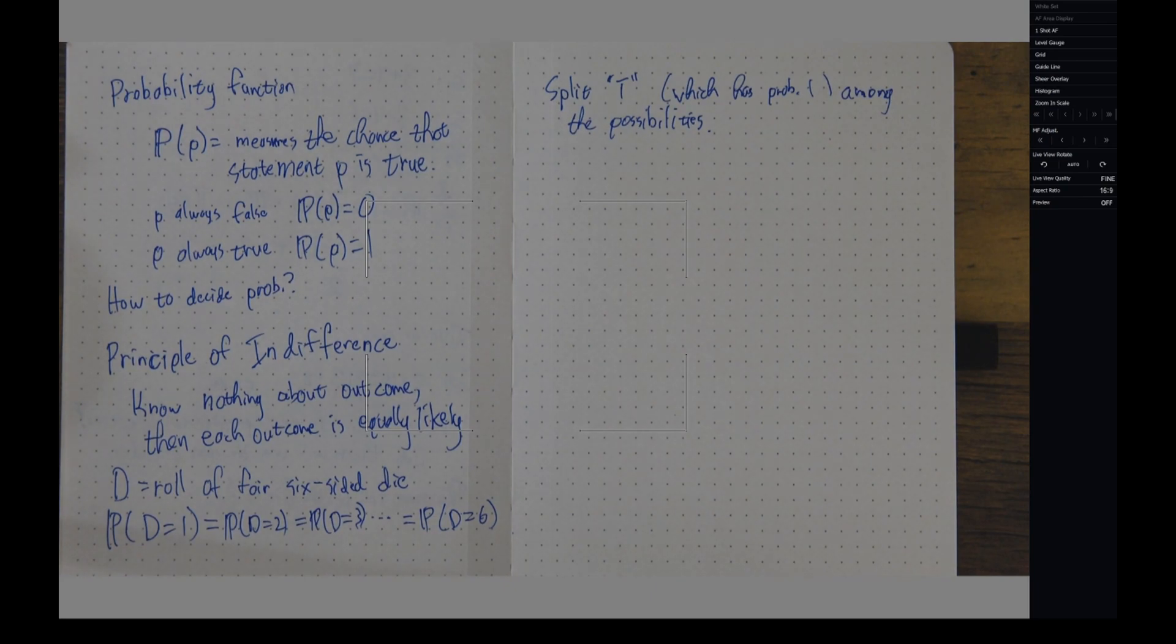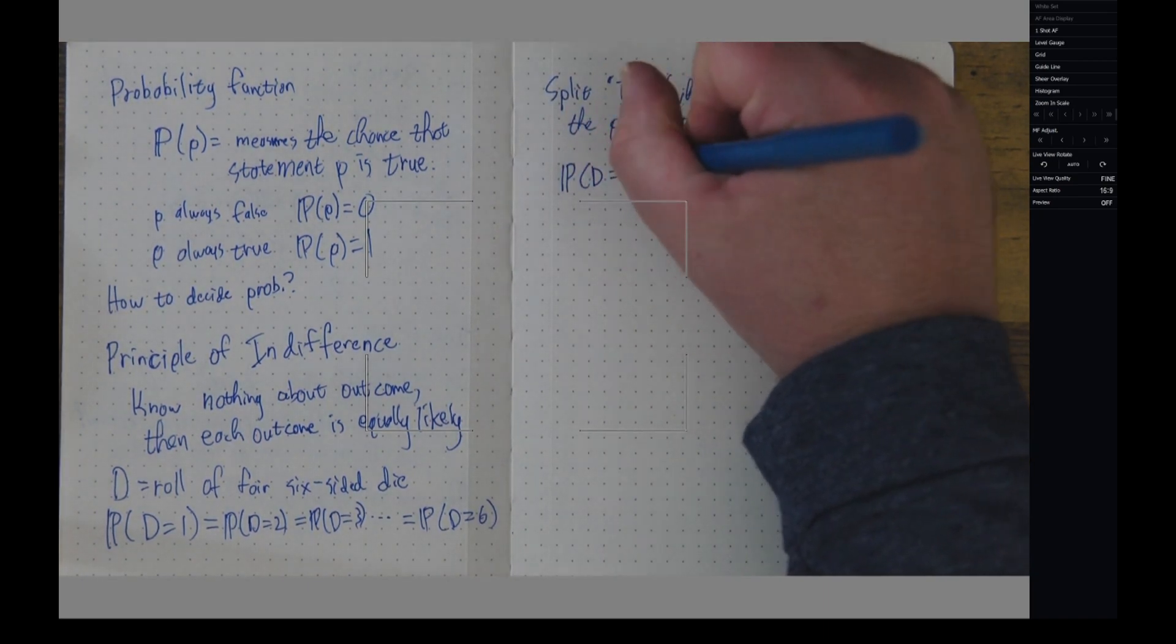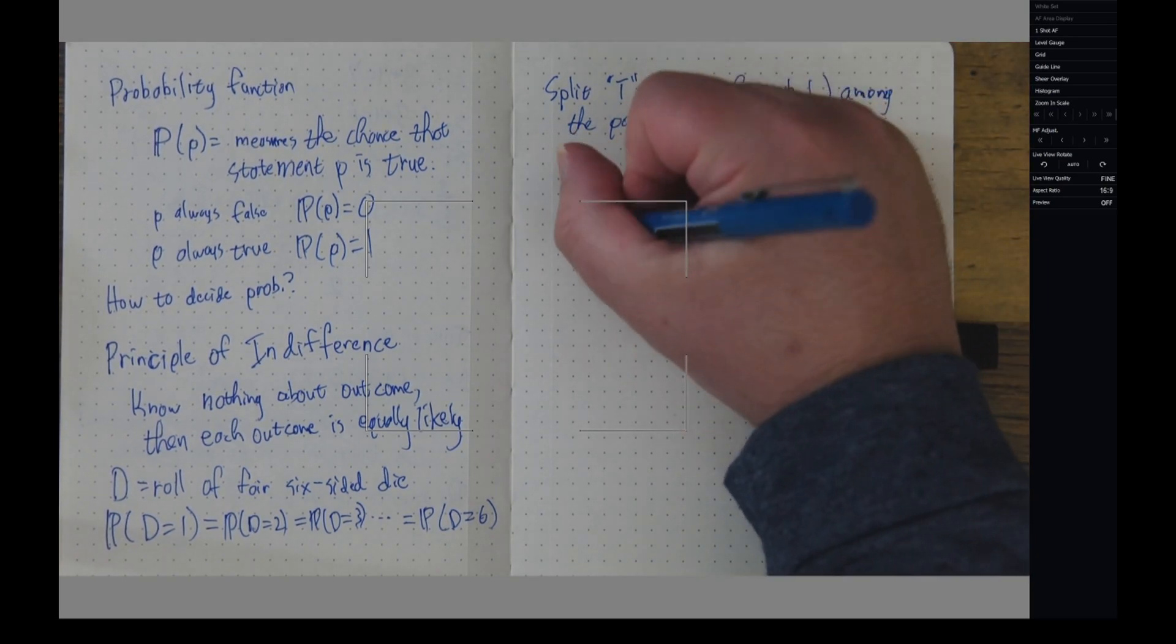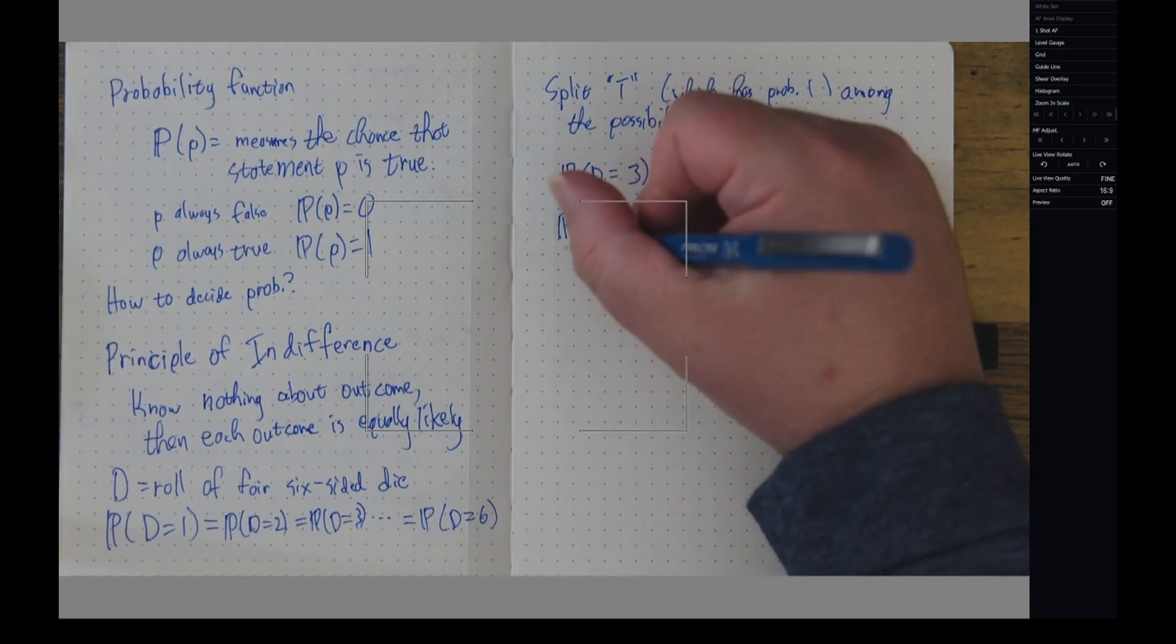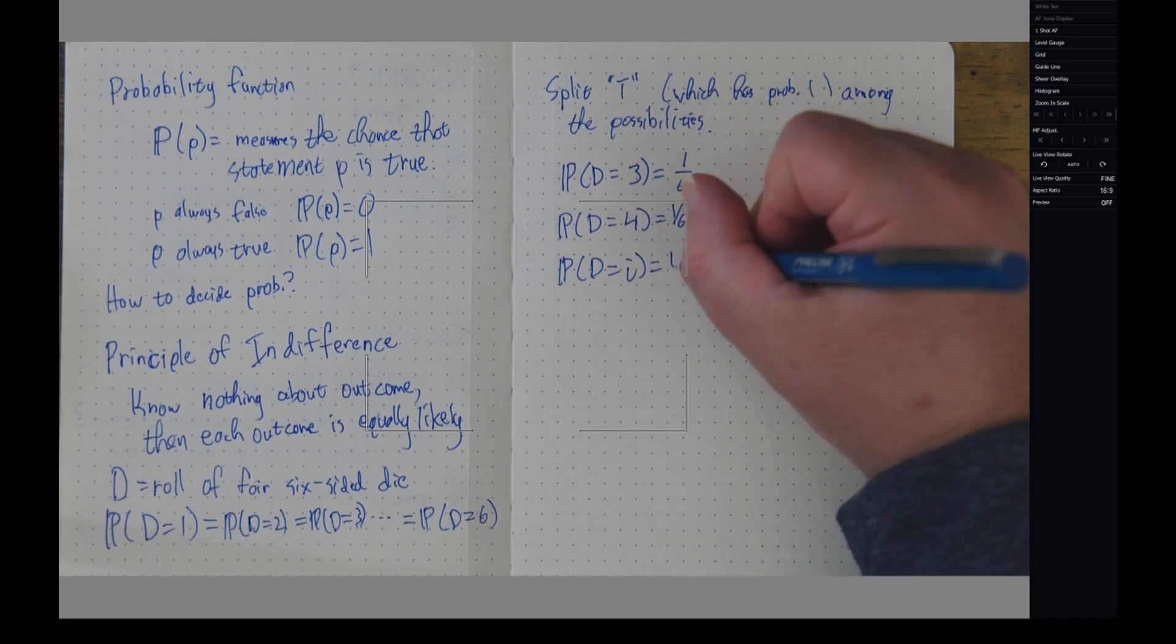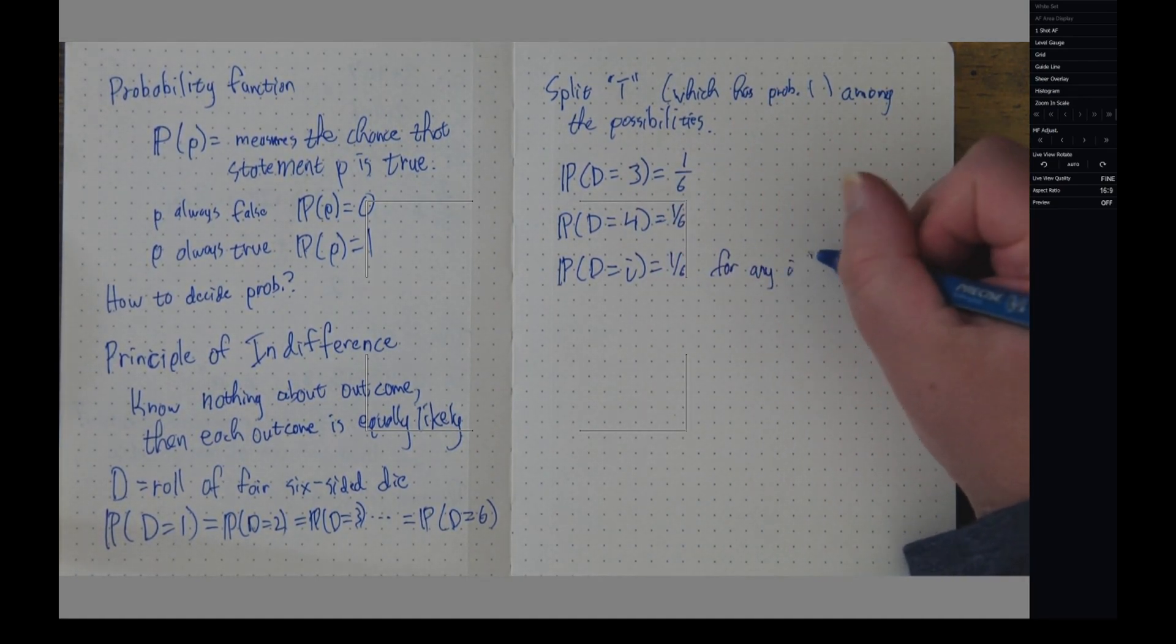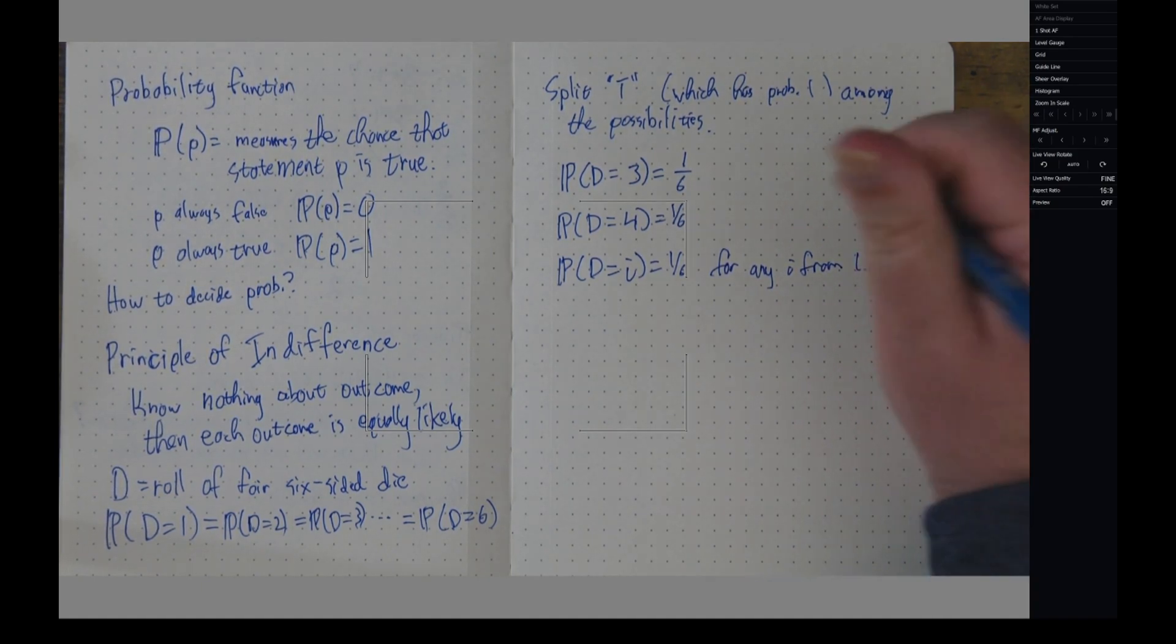But if I have this die that I have no idea whether it's weighted or not, then it makes sense to say that the probability that D equals three is going to be one-sixth, and the probability that D equals four is going to be one-sixth. And in general, the probability that D equals i is going to be one-sixth for any i from one up to six.